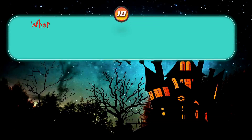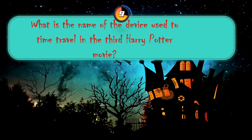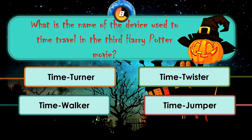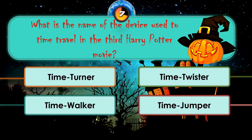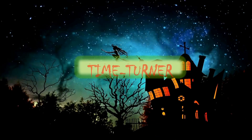What is the name of the device used to time travel in the third Harry Potter movie? Time Turner, Time Twister, Time Walker, Time Jumper. The correct answer is Time Turner.